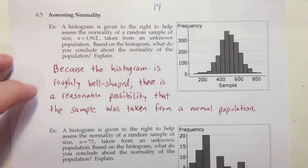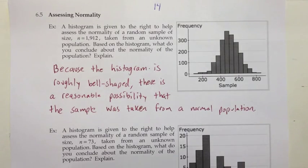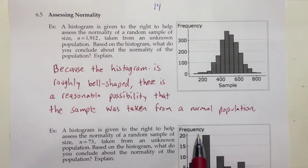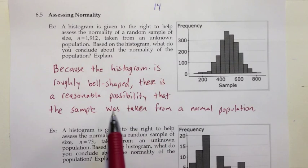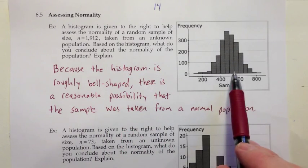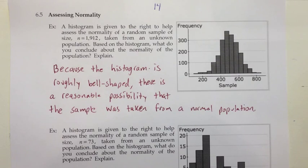It's important to notice that I didn't say because I have a bell-shaped histogram for my sample that I know I have a normally distributed population. I'm only saying that that's a reasonable possibility. We can't know for sure what shape population we have based on our sample, but if it looks kind of bell-shaped, then bell-shape is still in the running for what that could be.